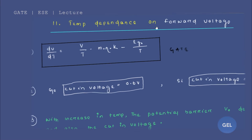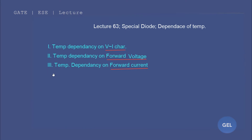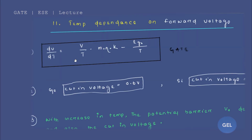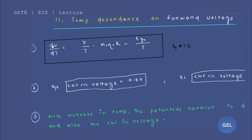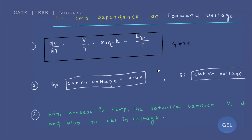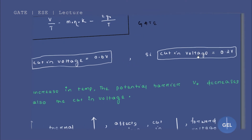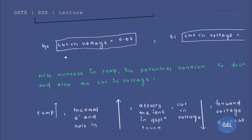Now, temperature dependence on forward voltage. There are also a couple of formulas here. This formula is change in voltage divided by temperature. Temperature here is not time. So dV by dT equals V by T minus m times eta times k, where k is Boltzmann's constant, minus EG0 by T. Now the cut-in voltage for germanium is 0.6, and the cut-in voltage for silicon is 0.2. So cut-in voltage for silicon is lesser than that of germanium.